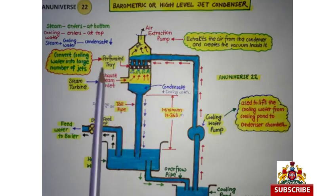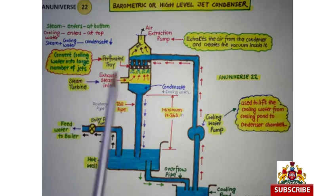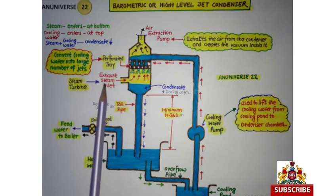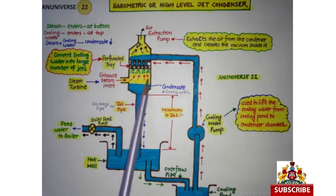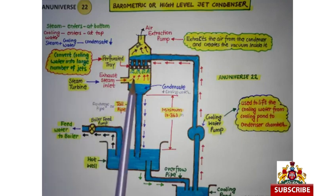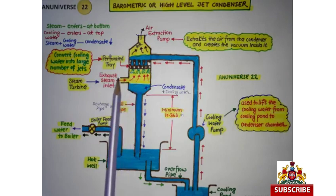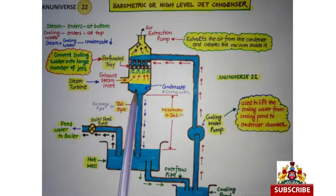Condenser Chamber में लगी Perforated Tray Cooling Water को Large Number of Small Jets में distribute कर देती है। उसके बाद जो Exhaust Steam है वह Cooling Water के साथ mix हो जाती है। जैसे यह Cooling Water के साथ mix होती है तो वह अपनी Latent Heat को reject करती है, जिसके कारण Steam का Phase Change हो जाता है और वह vapour से liquid में convert हो जाती है, और इस प्रकार Condensate बनता है।